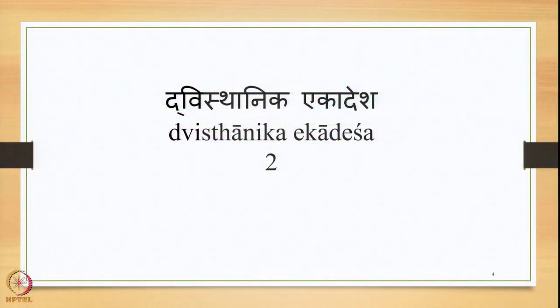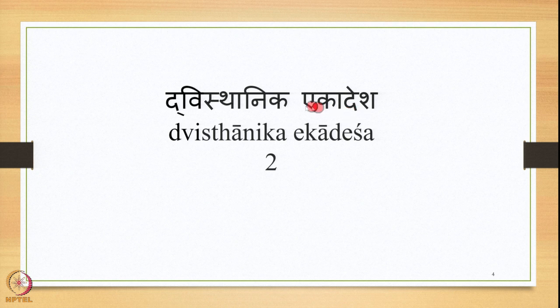After having studied these two instances of Ekasthanika Ekadesha, we moved ahead to the second classification: Dvishthanika Ekadesha, where you have two Sthanis and one Adesha — two substituents, one substitute.